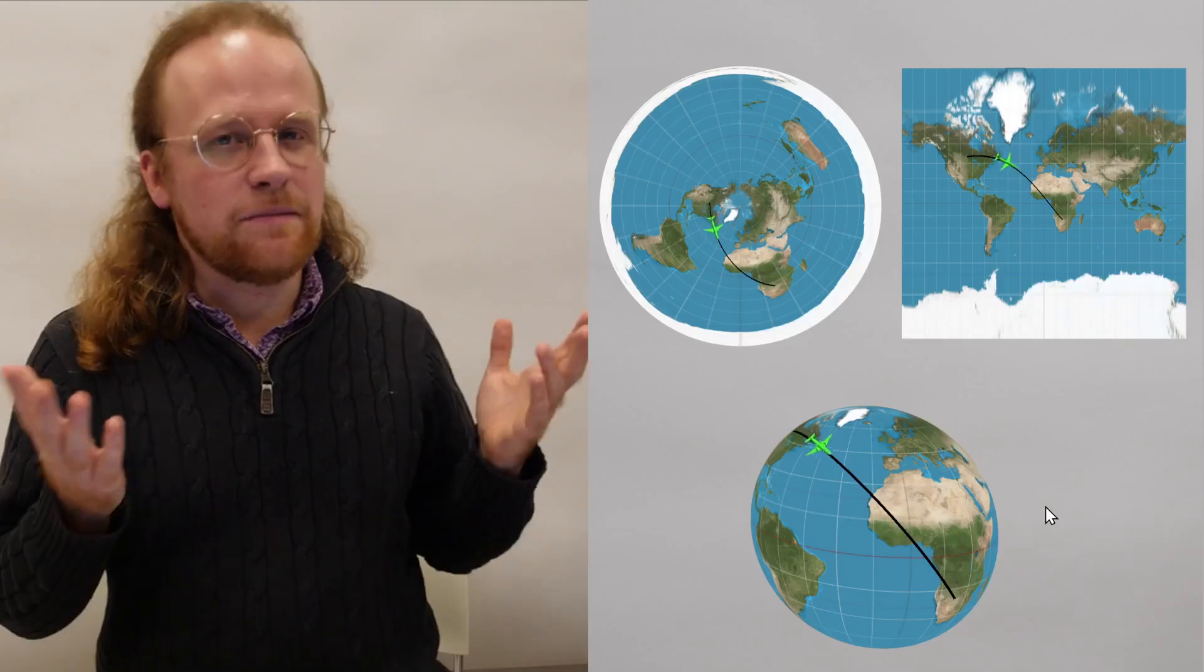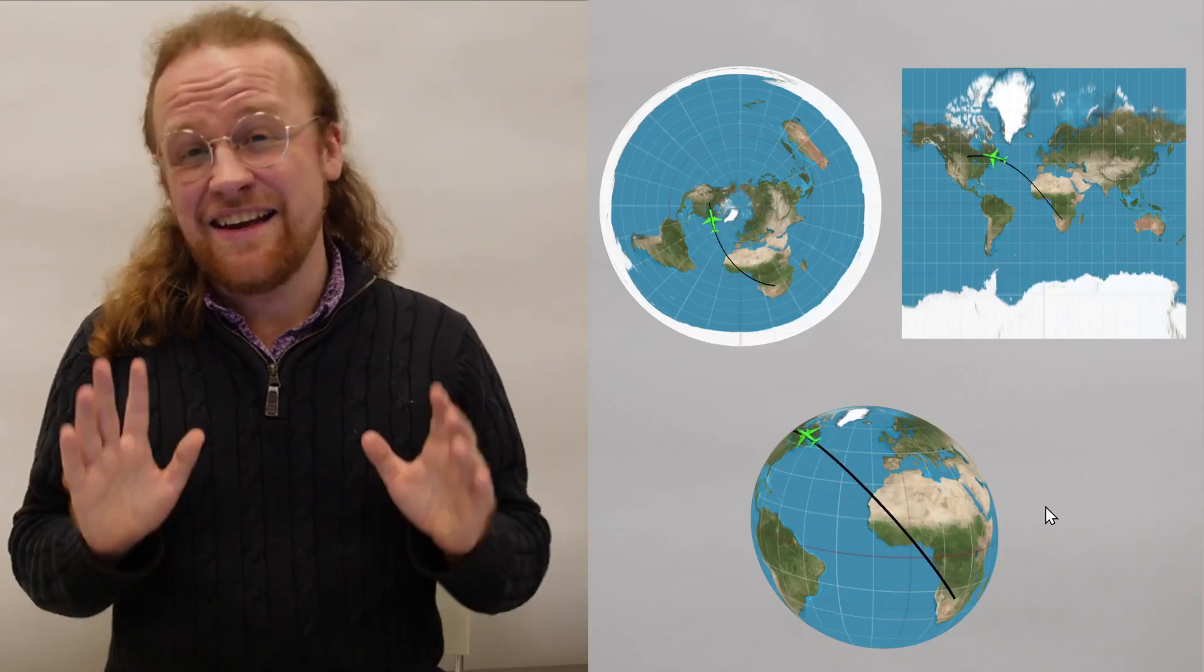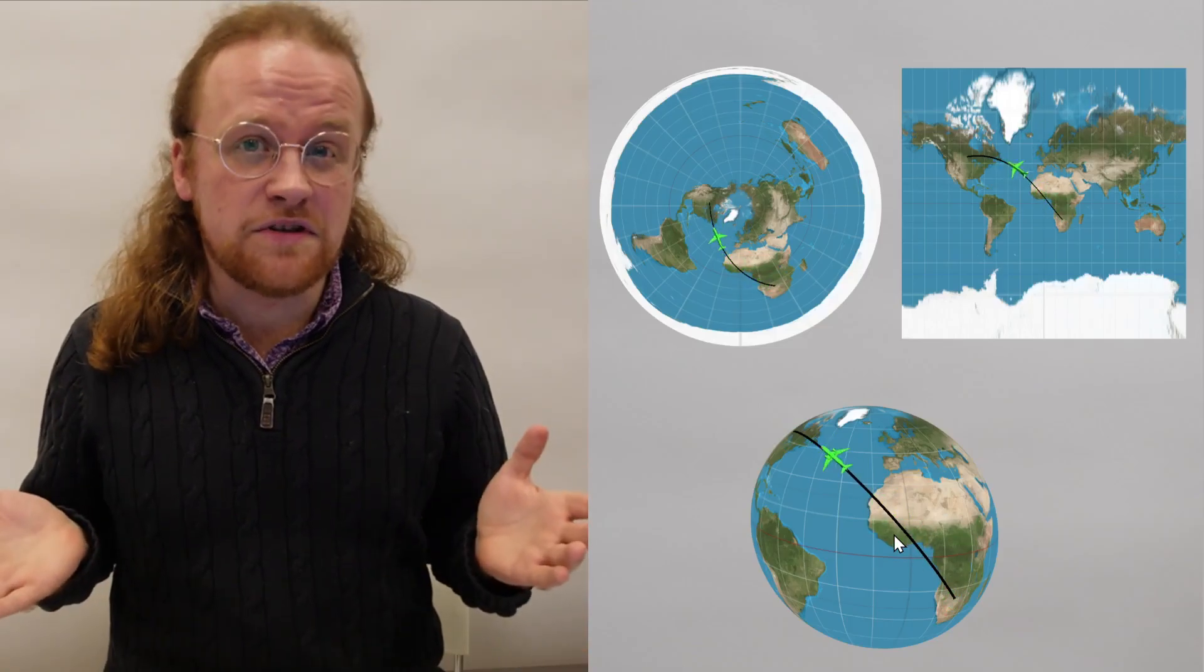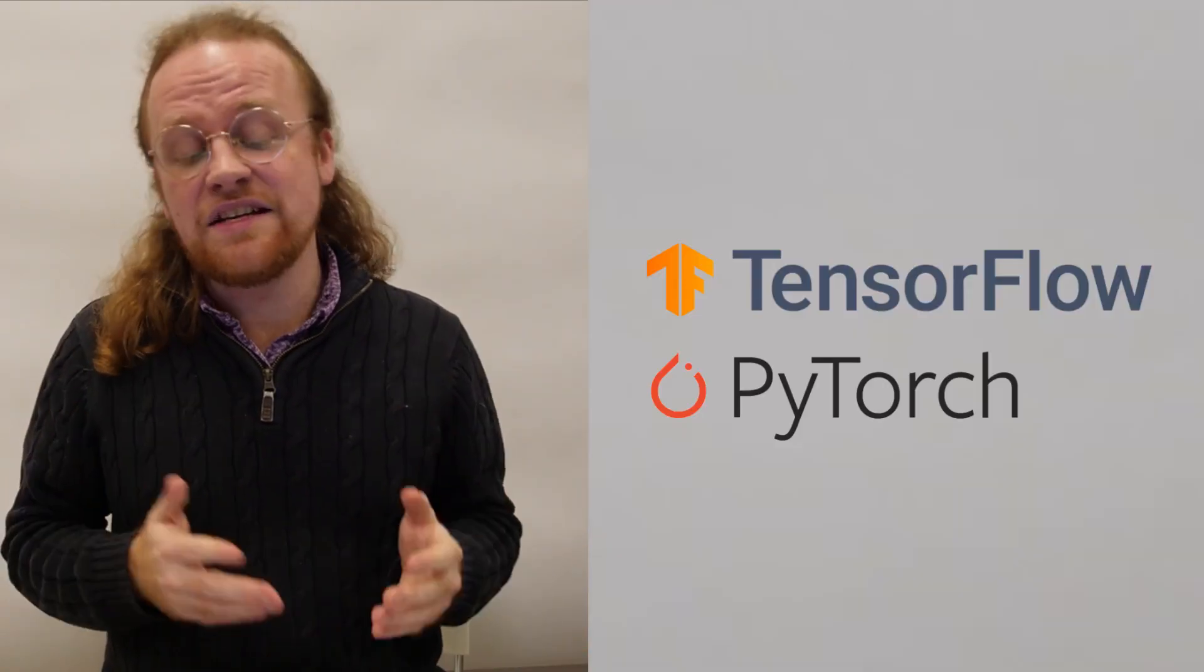Belief spaces are subject to the same sorts of distortion that maps are, except it's a bit worse because you have no globe to speak of. For that reason, lots of AI developers don't bother with belief space geometry.